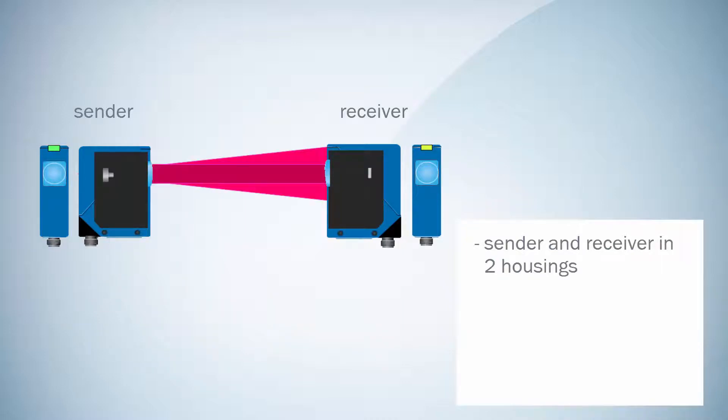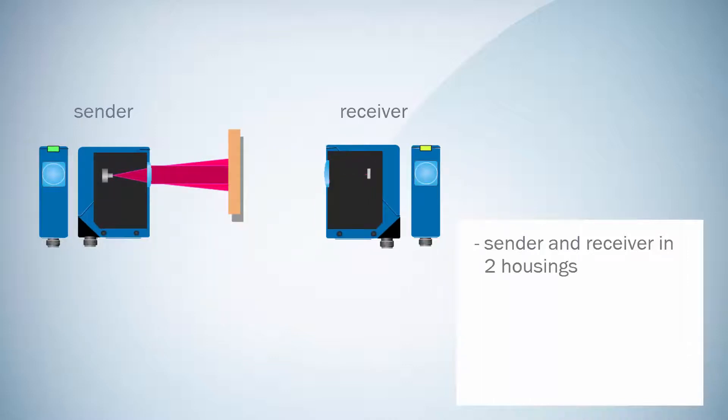The sender transmits a continuous light beam to the receiver, and as soon as this light beam is blocked, the output of the receiver sensor will switch.